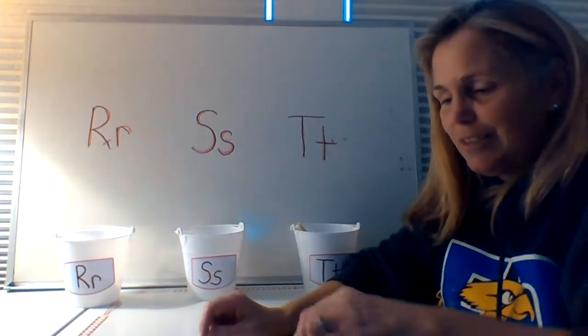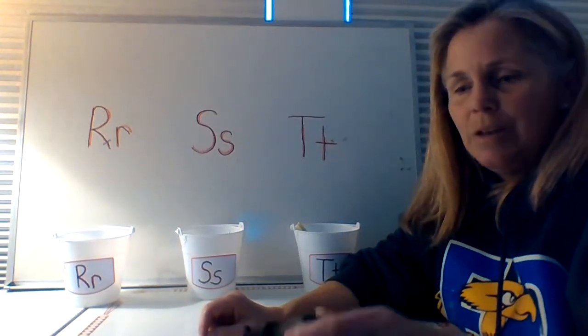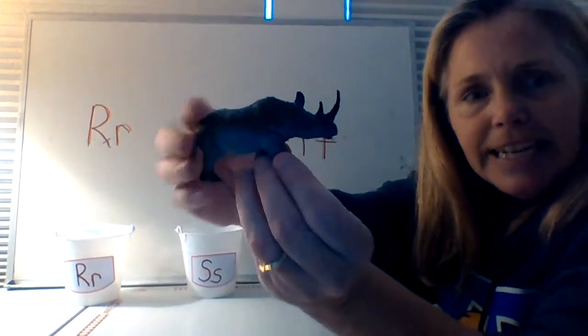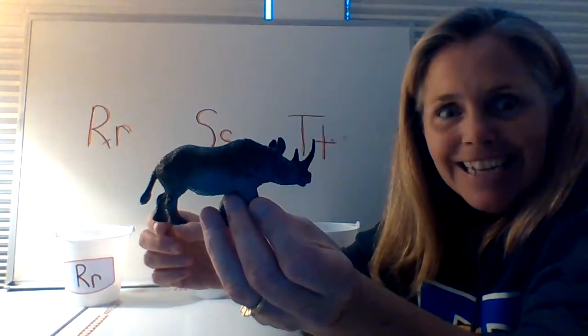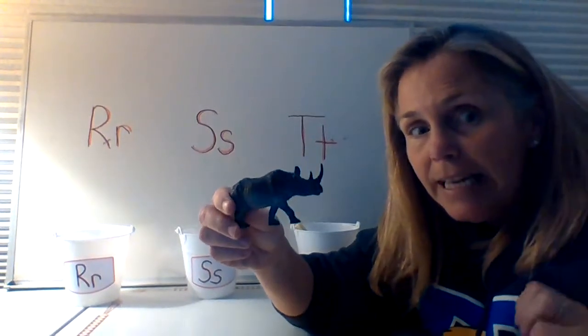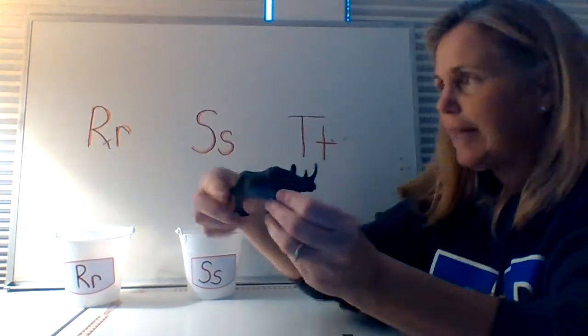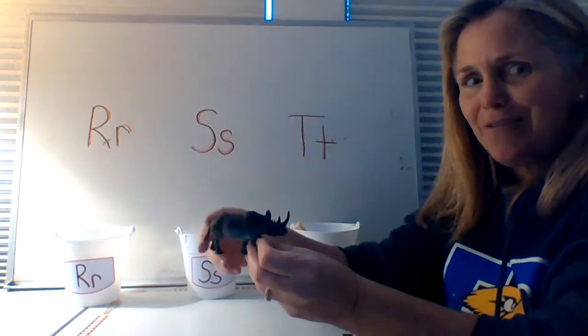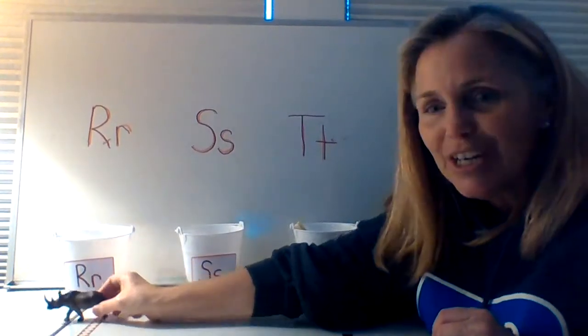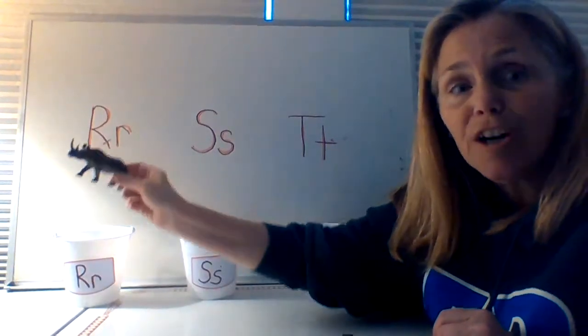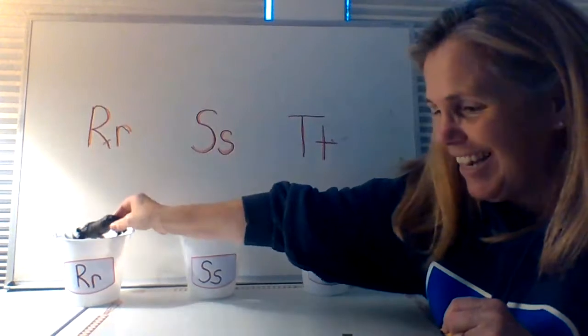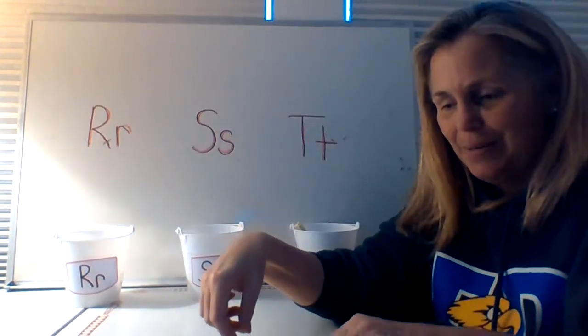Let's do the next one. What is this? Does anybody know what this animal is? It's a rhinoceros. What sound do you hear at the beginning? R. What letter says R? Show me friends. Ding, ding, ding, ding. You're right. R. R, R, rhinoceros. Nice job.